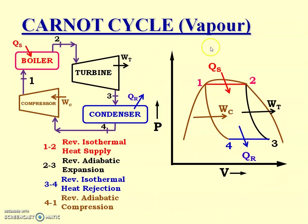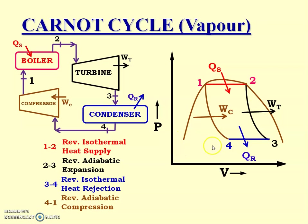Looking at this diagram, the condition at point 1 is saturated liquid. At point 2 it is dry steam. At point 3 it is wet steam, and at point 4 it is also wet steam. These states are determined using the saturation curve. To fully understand the logic, kindly refer to my video on the steam generation process.